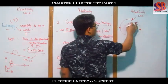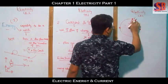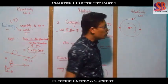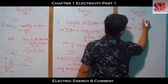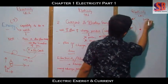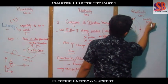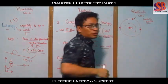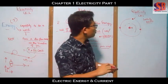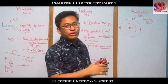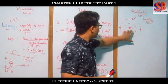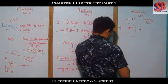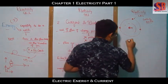The electron is loosely bound. It is almost free. The electron in a metal is loosely bound and essentially free to move.